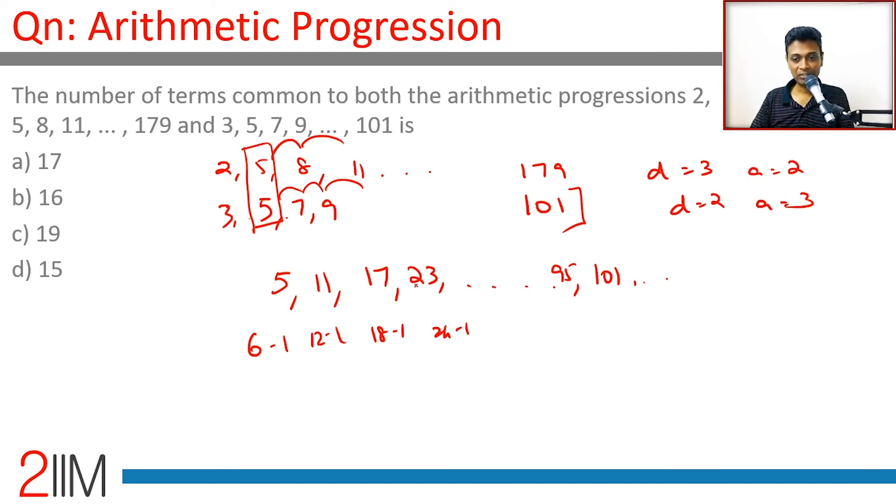Looking at all numbers from 5 to 101 in this sequence: this is 6 minus 1, 12 minus 1, 18 minus 1, all the way to 102 minus 1, which is 6 into 17 minus 1. Starting from 6 into 1 minus 1, going to 6 into 2 minus 1, 6 into 3 minus 1, all the way till 6 into 17 minus 1. There are 17 terms.